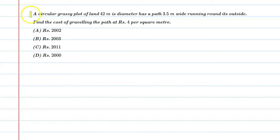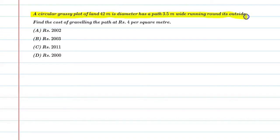Hello students, let's solve this question. A circular grassy plot of land has 42 meters diameter and has a path 3.5 meters wide running around its outside. Find the cost of graveling the path at Rs. 4 per square meter. So what does this question mean?